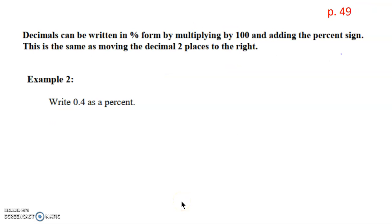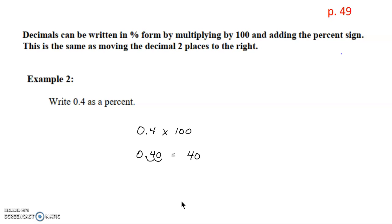Conversely, if you're starting with a decimal, instead of dividing by 100 you can multiply by 100. You can do this the fast way by moving the decimal two places to the right. So if we take 0.4 and want to write it as a percentage, we multiply by 100 — moving two decimal places to the right and filling in the extra zero — so 0.4 is 40%.